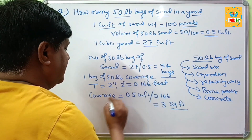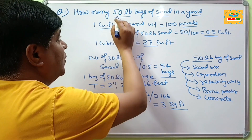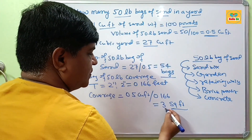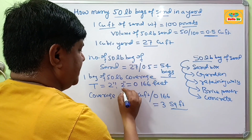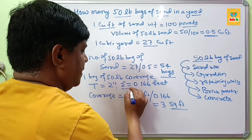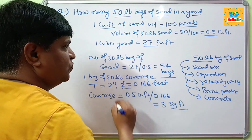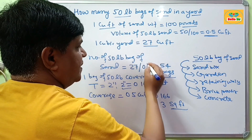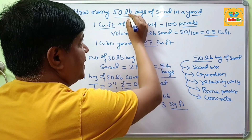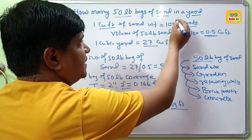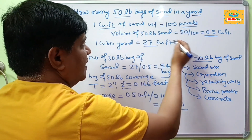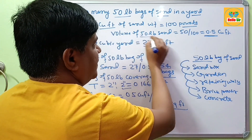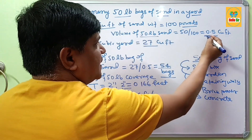So that is your answer. 54 bags of 50 lb sand equals 1 cubic yard. One 50 lb bag of sand equals 0.5 cubic feet, and at 2 inches thick, one bag covers about 3 square feet.